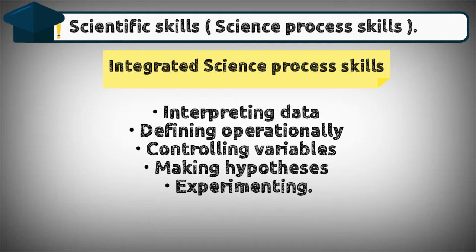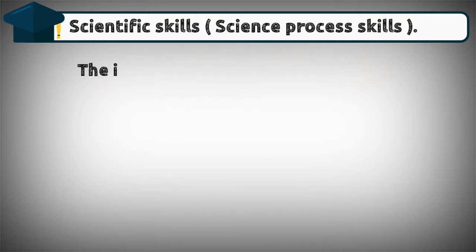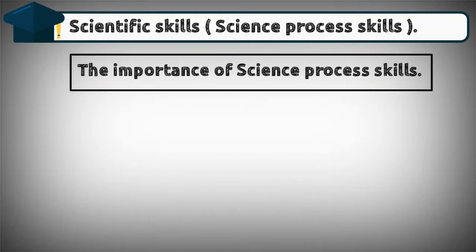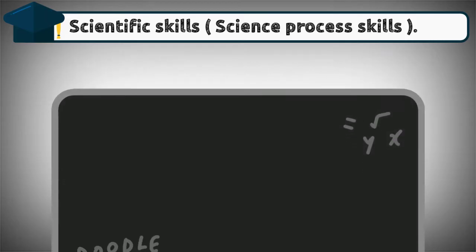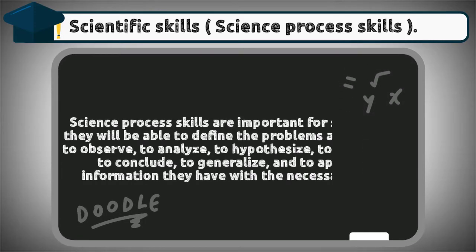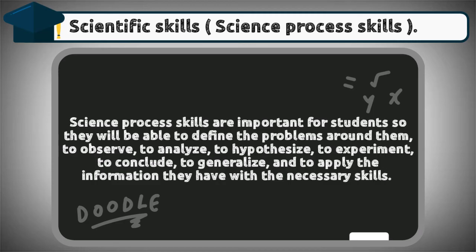The importance of science process skills: science process skills are important for students so they will be able to define the problems around them, to observe, to analyze, to hypothesize, to experiment, to conclude, to generalize, and to apply the information they have with the necessary skills.